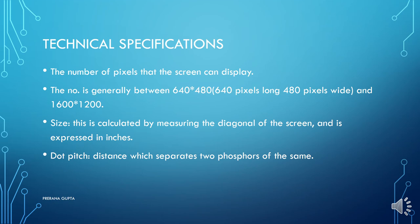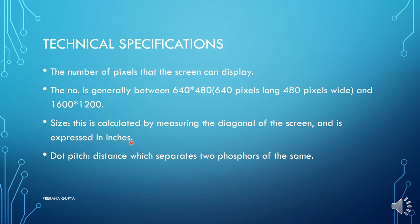Now, technical specifications. The number of pixels the screen can display is generally between 640×480 and 1600×1200. Two common specifications for CRT are 640×480 or 1600×1200. Size is calculated by measuring the diagonal of the screen — from the top-left corner to the bottom-right corner — and is expressed in inches.